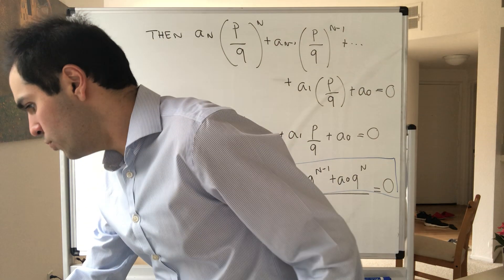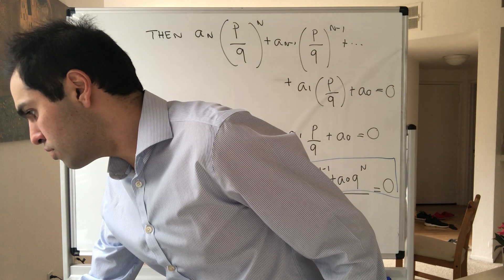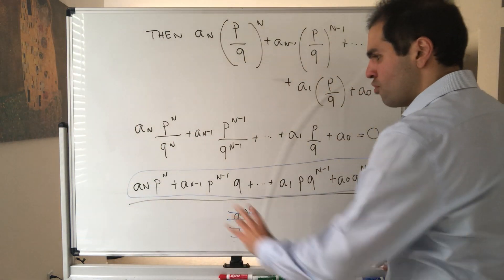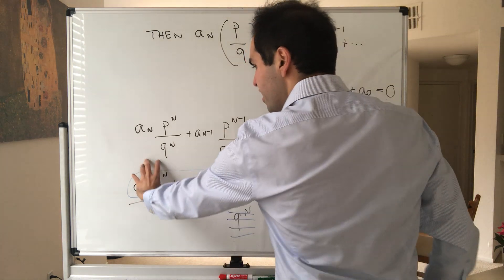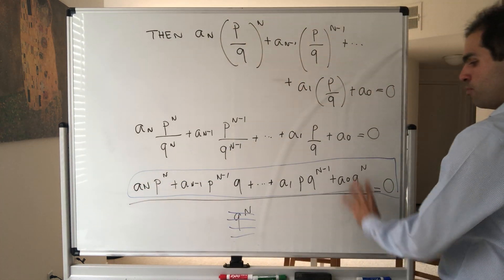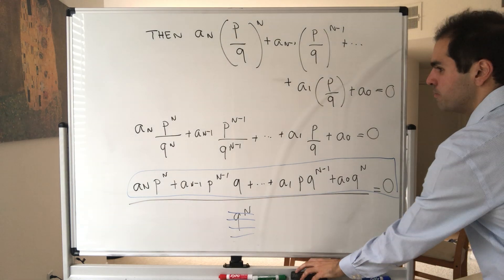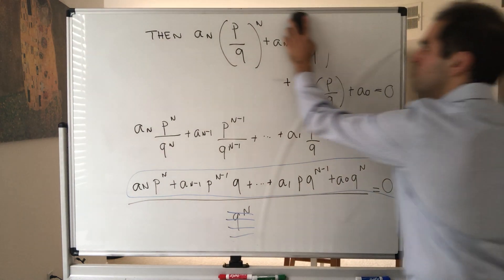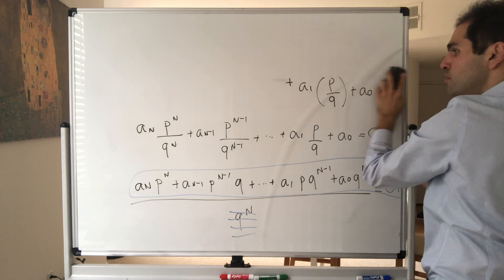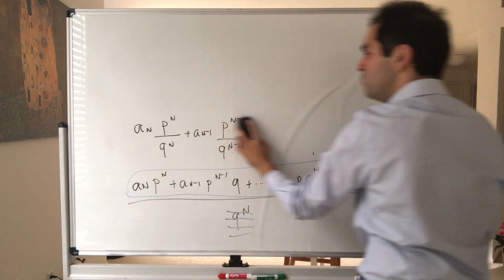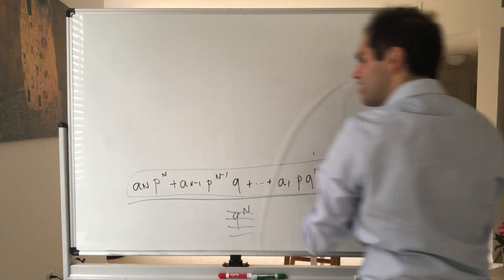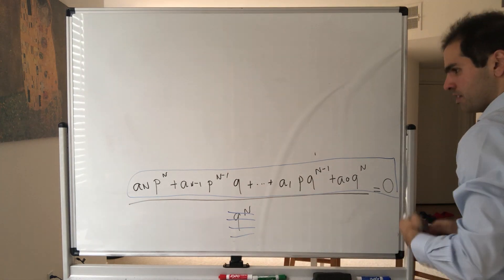And essentially all that's left is, in this equation what we want to do: first, we would like to solve for a_n p^n, and in the second step we just want to solve for a_0 q^n. So step two.